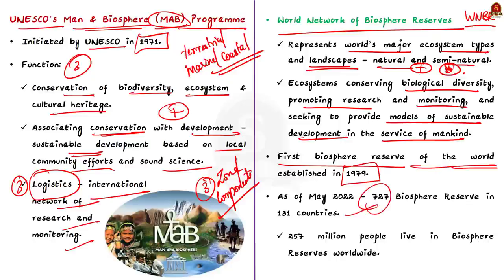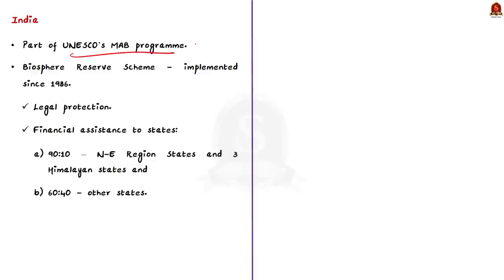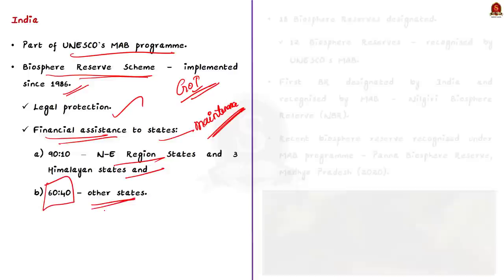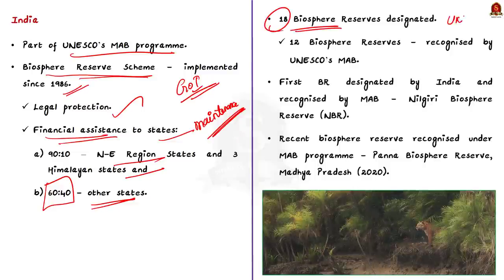An interesting fact is that about 257 million people live in biosphere reserves worldwide. India is a part of the Man and Biosphere Reserve program. Additionally, India separately has a scheme called Biosphere Reserve being implemented by the Government of India since 1986, under which ecologically unique and biodiversity-rich regions are legally protected as biosphere reserves. The scheme provides financial assistance to states at a 90:10 ratio for northeastern and three Himalayan states, and 60:40 for other states. Under India's program, 18 biosphere reserves have been declared, out of which 12 have been recognized by UNESCO on the World Network of Biosphere Reserves.